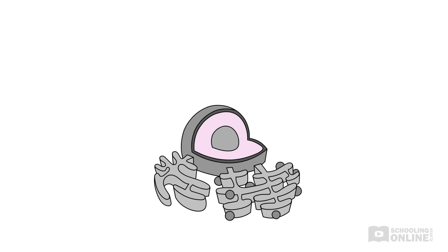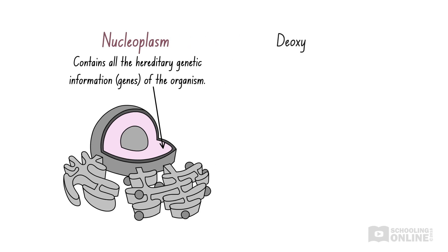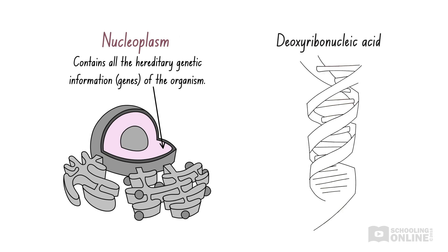Once we move past the nuclear membrane, we arrive at the second major component of the nucleus. The nucleoplasm is a liquid area that contains the hereditary genetic information needed to run the animal cell, including genes that are passed from one generation to the next. Genes contain the instructions for making an organism and keeping it alive. This information is stored in the form of multiple linear chromosomal DNA molecules, where DNA stands for deoxyribonucleic acid — molecules made of a long chain of nucleotide bases in the shape of a double helix that encode genes.